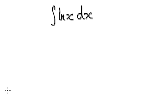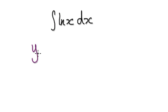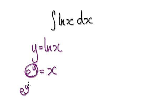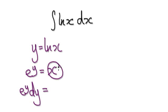To do this, start out by saying let this be y — so y equals the natural log of x. From here, write e to the power of y equals x. Then from our section on differentials, differentiate both sides: the left side differentiates to e to the y dy, and the right side gives dx. So dx equals e to the y dy.